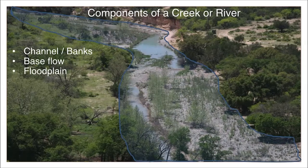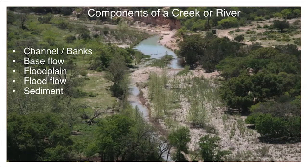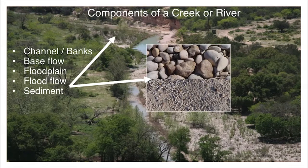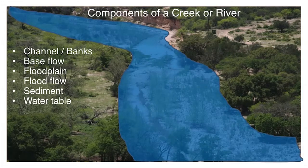Then we have the flood plain, where flood waters reach on a regular basis. Flood flows are an essential component of the river system. The flood plain is made up of sediments, which can range in size from fine sand to large rocks. The invisible water table stored within the land is connected to the creek and is an important part of the riparian system.